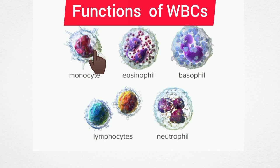Lymphocytes play an important role in immunity. Functionally, lymphocytes are classified into two types: T-lymphocytes and B-lymphocytes. The T-lymphocytes are responsible for the development of cellular immunity, and the B-lymphocytes are responsible for the development of humoral immunity.